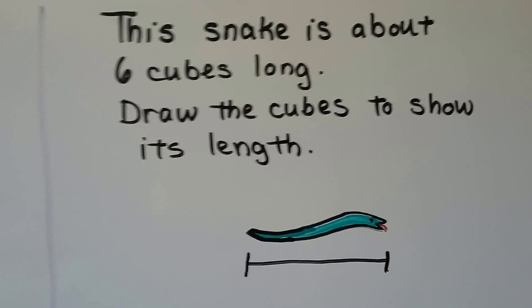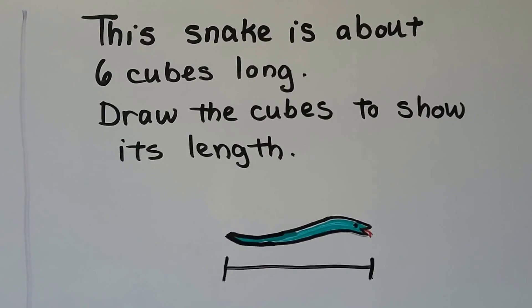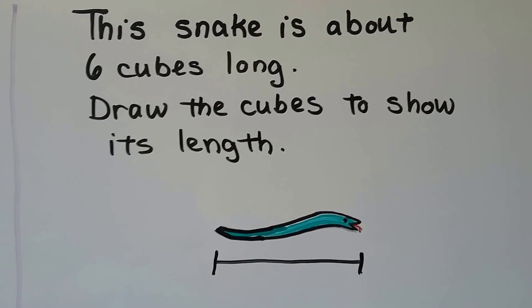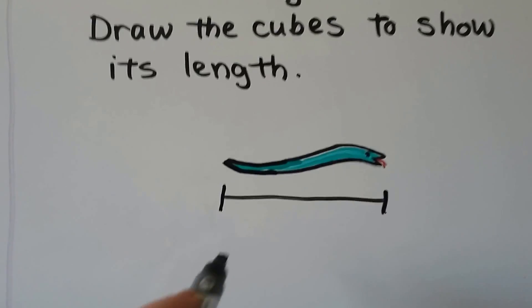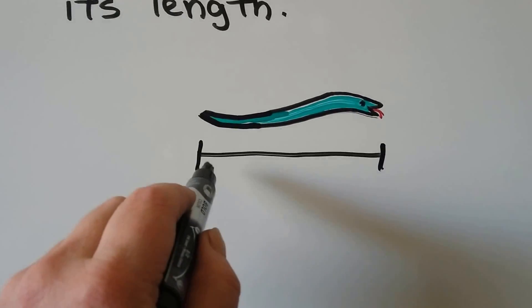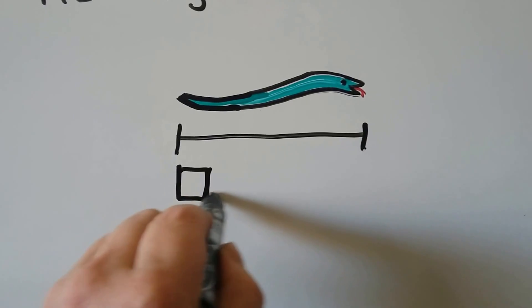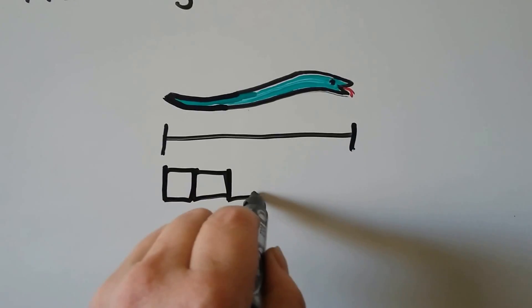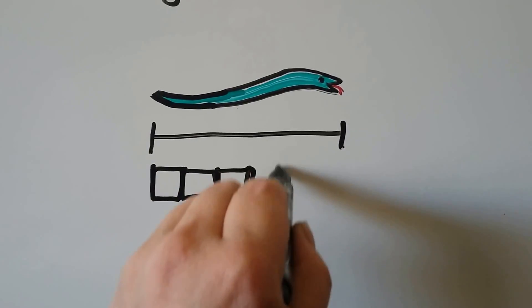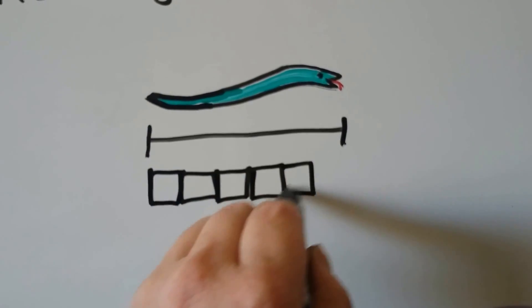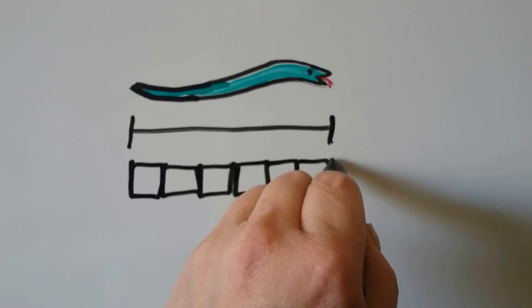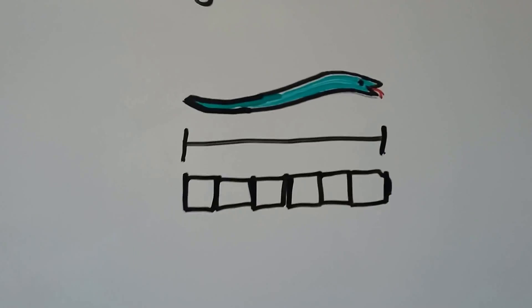This snake is about six cubes long. Draw the cubes to show its length. So we need to draw six cubes that are all the same size. That could be tricky. One, two, three, four, five, oops, six. Six cubes.